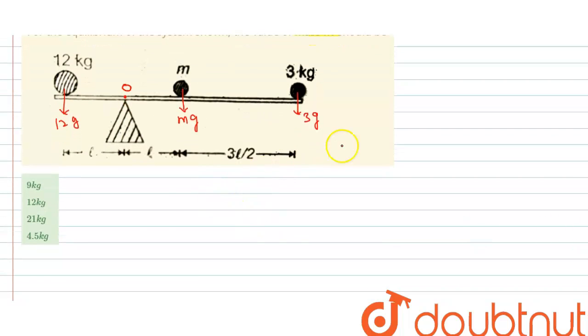Torque about O due to 3g is 3g times the distance from O, which is L plus 3L/2. Torque due to 3g about O is force times perpendicular distance, and the perpendicular distance is L plus 3L/2. So 3L/2 plus L is 5L/2.